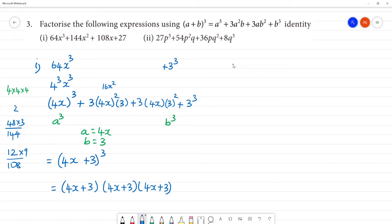Next, the second one. For the second one, we have 27p³, which is (3p)³.